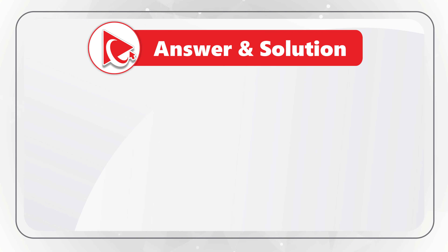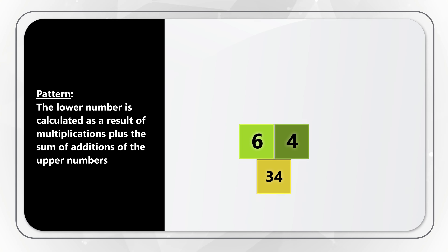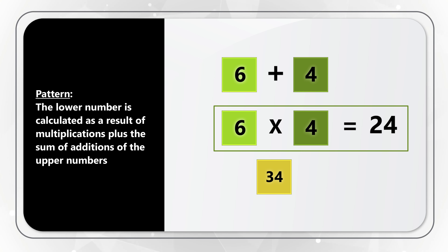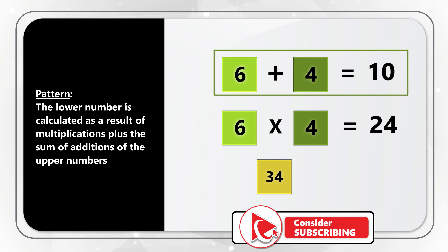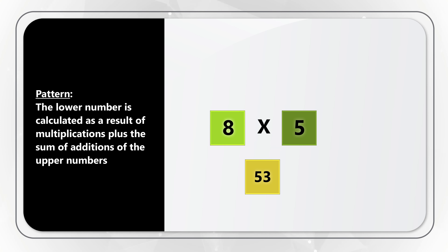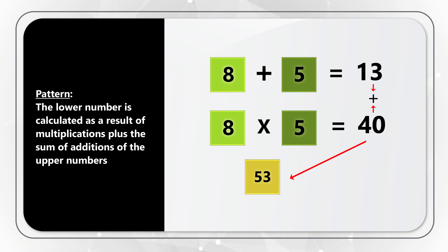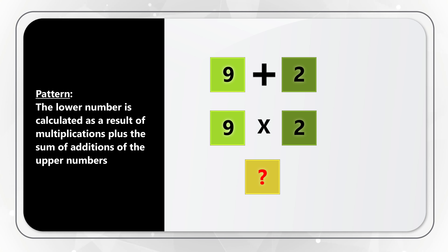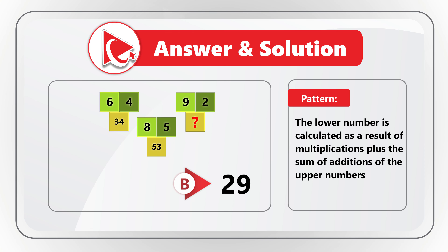There is a very interesting and unusual pattern: the lower number is calculated as the result of multiplying the upper numbers plus the sum of the upper numbers. For example, the first set: 6 multiplied by 4 plus the sum of 6 and 4 equals 24 plus 10, which equals 34. The next set: 8 multiplied by 5 plus the sum of 8 and 5 equals 40 plus 13, which equals 53. For the final set: 9 multiplied by 2 plus the sum of 9 and 2 equals 18 plus 11, which equals 29. The correct answer is choice B, 29.